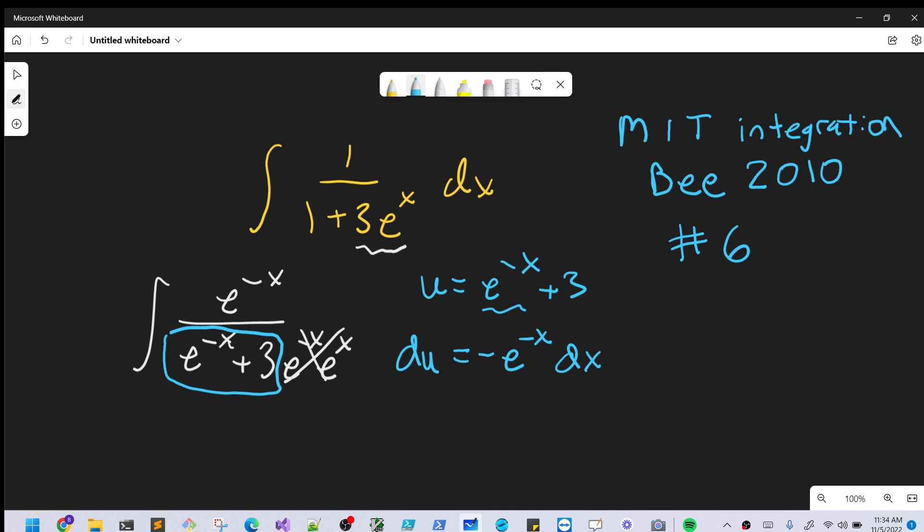I don't want to forget that—and I already forgot a dx. Let's put that back in there. Next, to make our numerator look exactly like this du, I'm going to factor in a negative, and multiply by -1 on the outside.